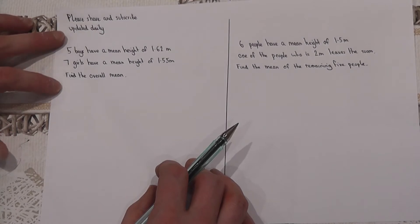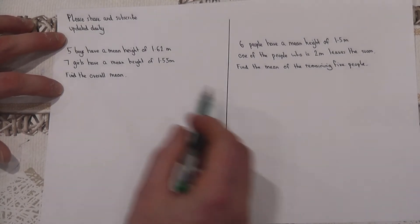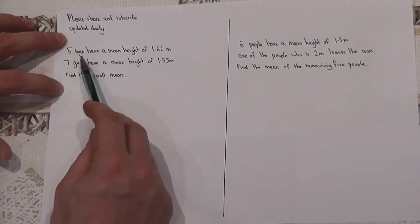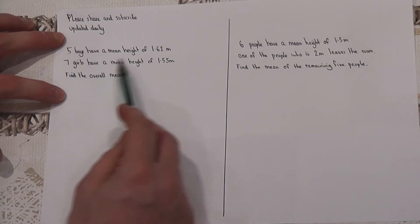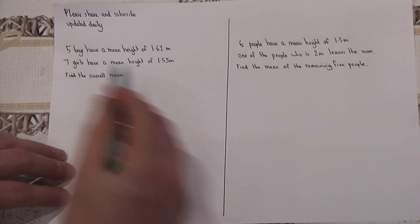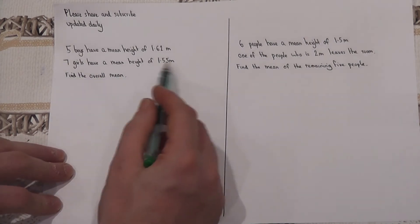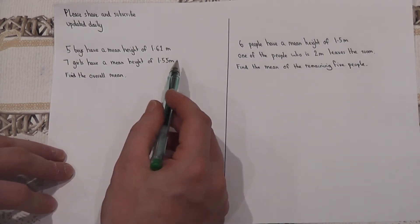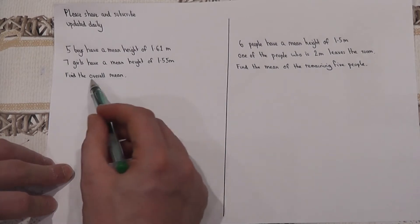Okay, in problem one we've got five boys and the boys have got a mean height of 1.62 meters. There were seven girls with a mean height of 1.55 meters, and we're asked to find the overall mean of all the boys and all the girls.